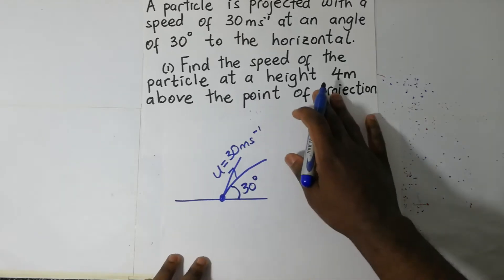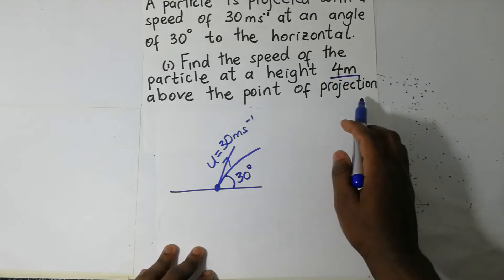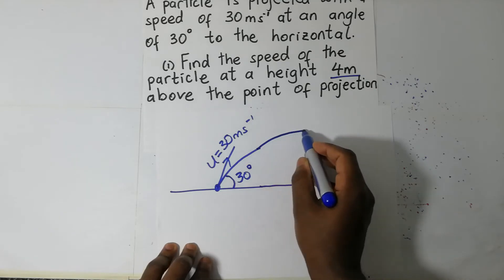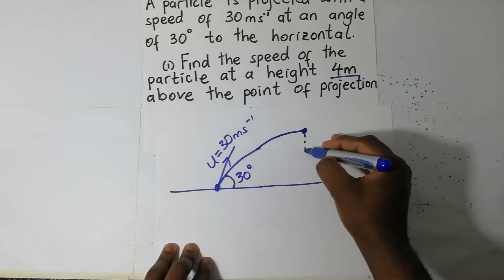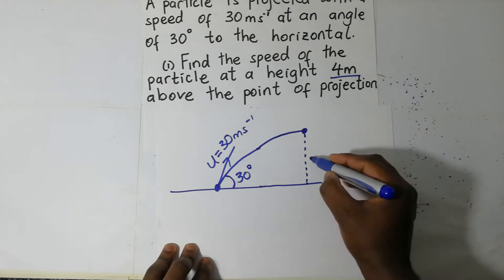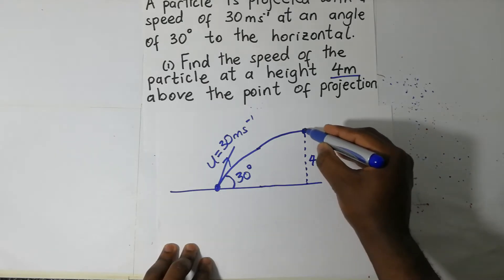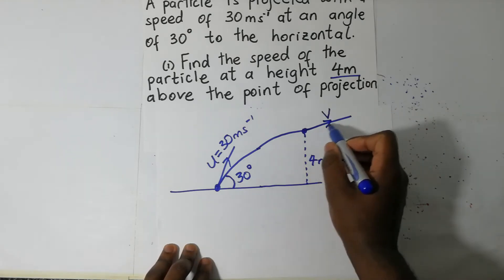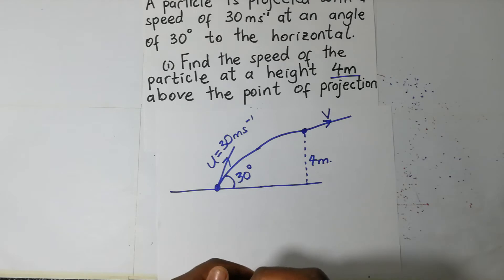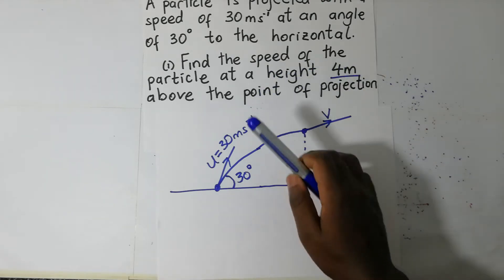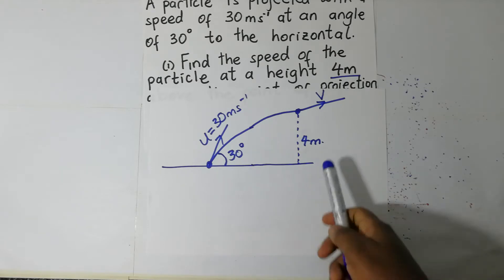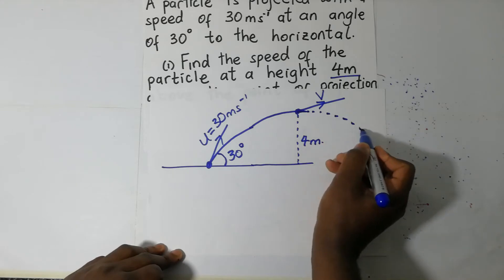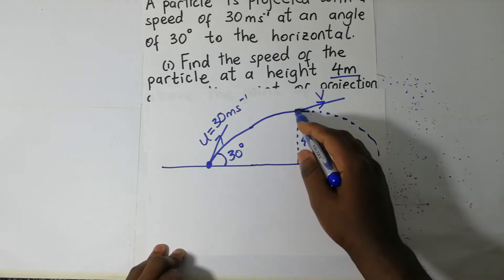Find the speed of the particle at a height four meters above the point of projection. This is the point of projection. So if the particle has been projected upward, it reaches a point where this distance is four meters. They want us to find the speed at that point.